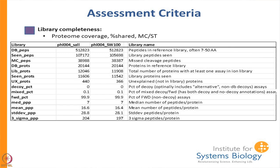One caveat: this is the number of tryptic peptides — perfectly tryptic peptides — matching those perfectly tryptic peptides. Twenty percent of the entire proteome is covered in this library. We know there are about 12,000 out of 20,000 proteins covered, so we have only covered 60 percent of the proteins. For those other proteins, we are just not getting perfect coverage.